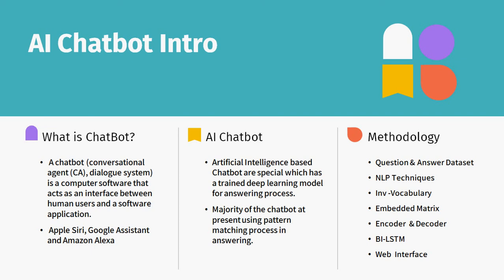What is an AI chatbot? The majority of chatbots use a pattern matching process — for example, if you say 'good morning,' a predefined answer is returned. But an artificial intelligence based chatbot is special: it has a trained deep learning model inside it. Whatever question you ask, it will give an output. If the pattern is not matched in a traditional chatbot, it cannot answer. But with an AI chatbot, you will get a relevant answer even if it is not in the database. That is the ultimate objective of the AI chatbot.